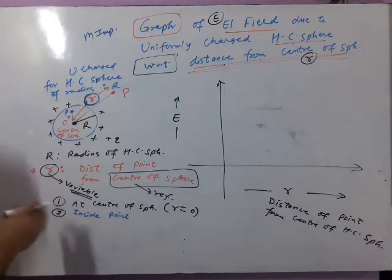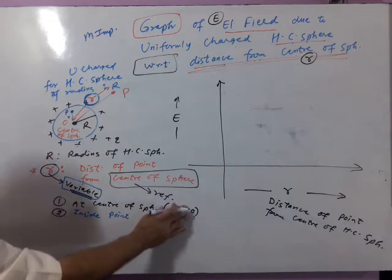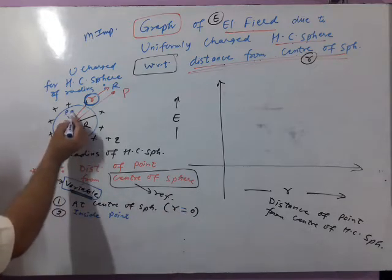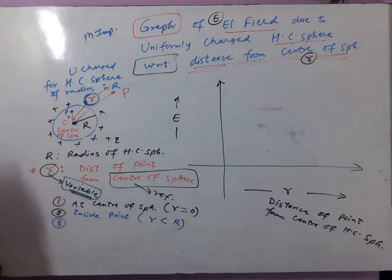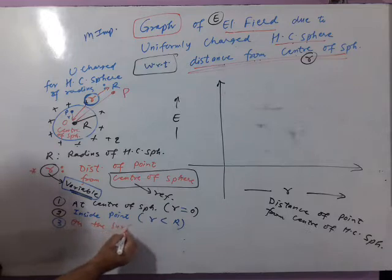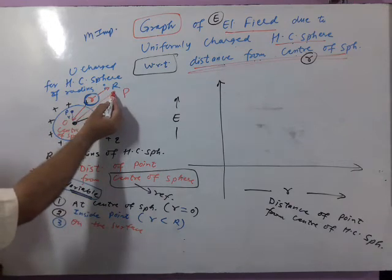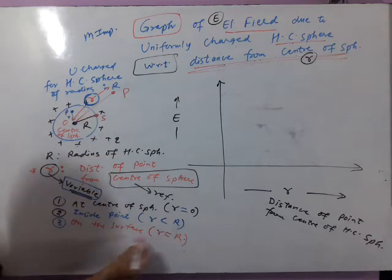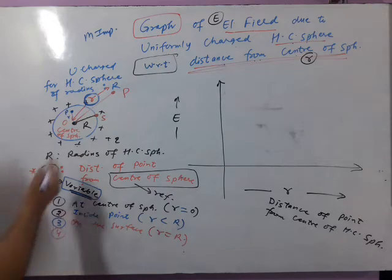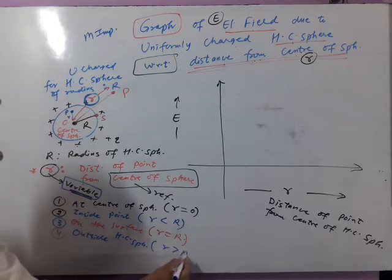Since small r is variable, it is changing. At the center, small r is 0. For an internal point, it is less than capital R. On the surface, small r equals capital R. Outside the hollow conducting sphere, small r is greater than capital R.